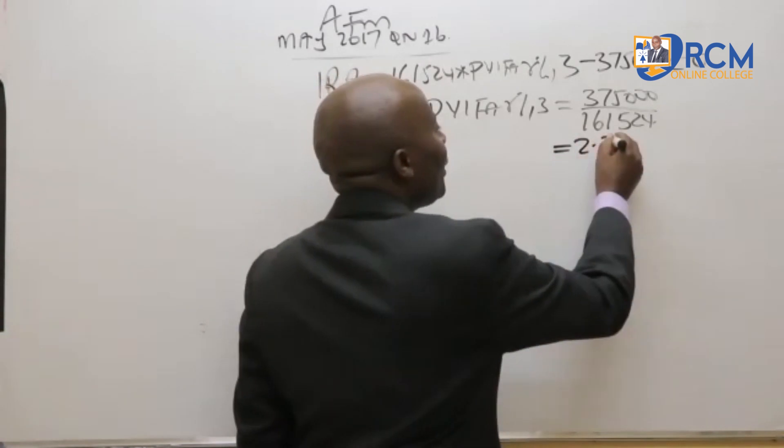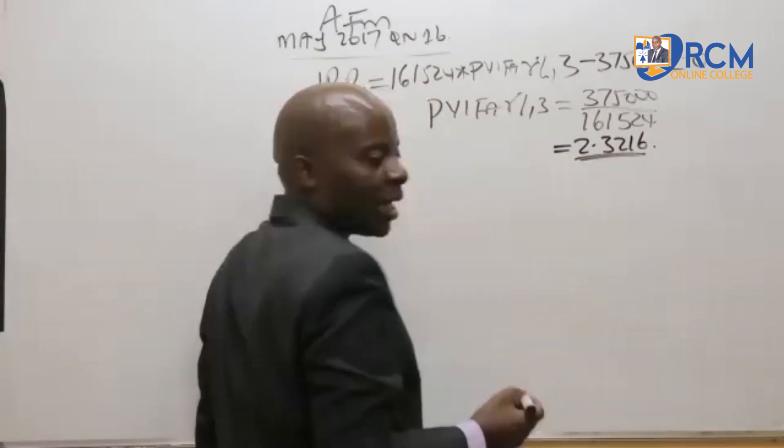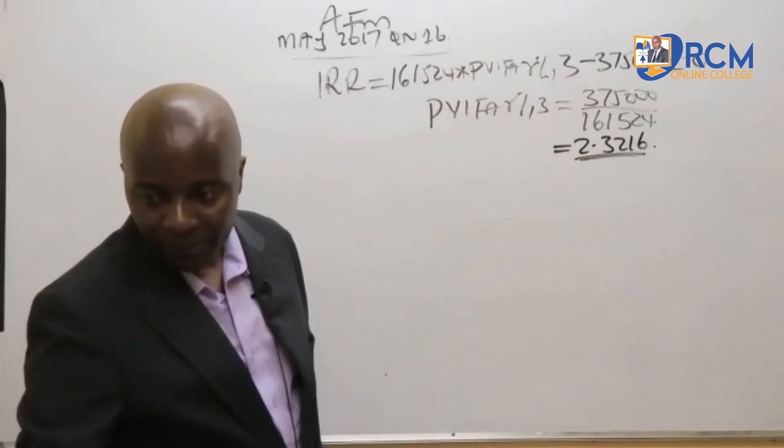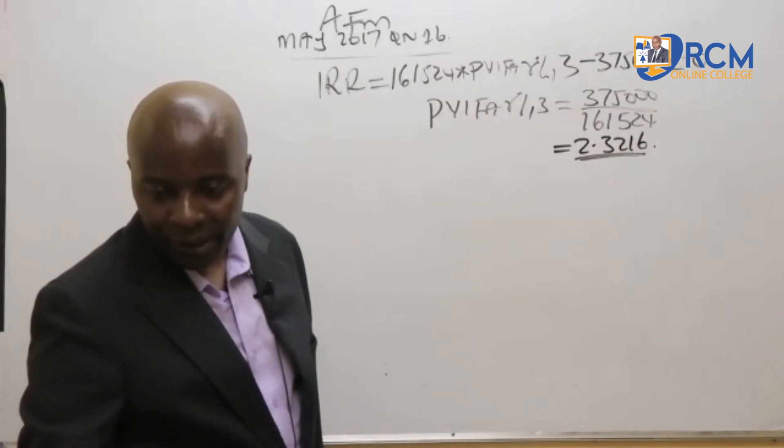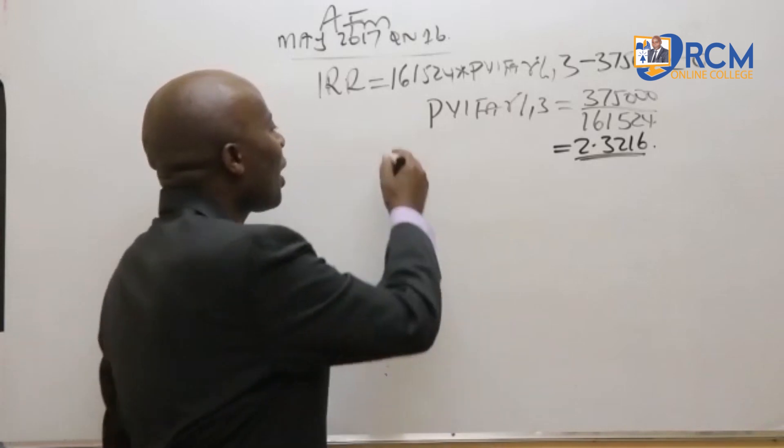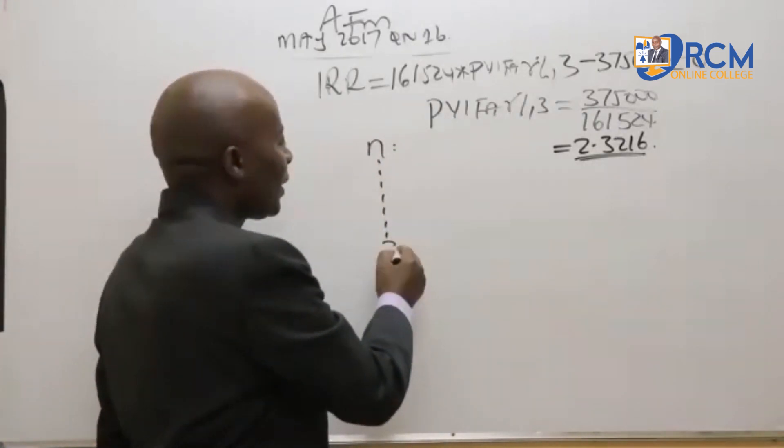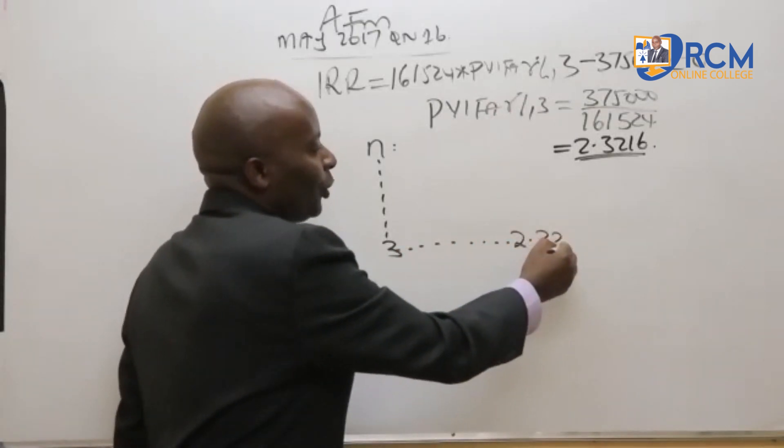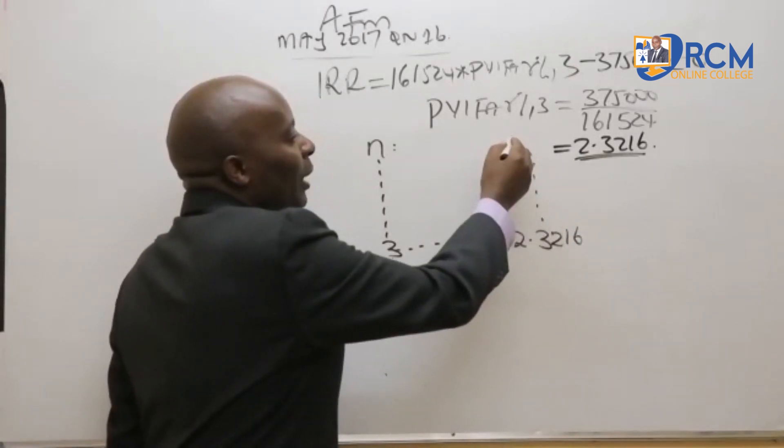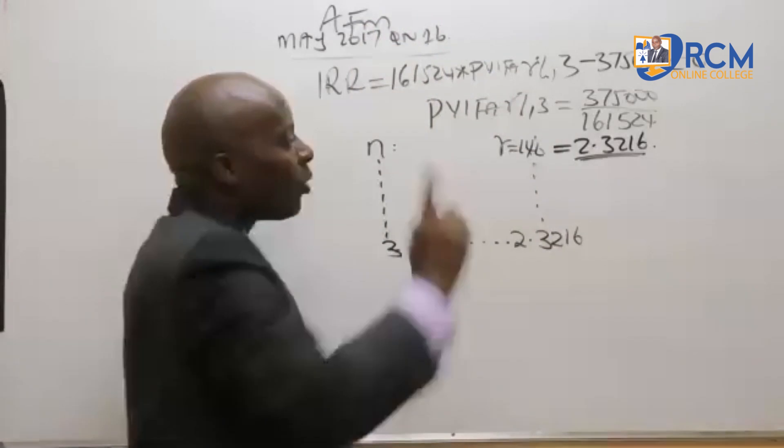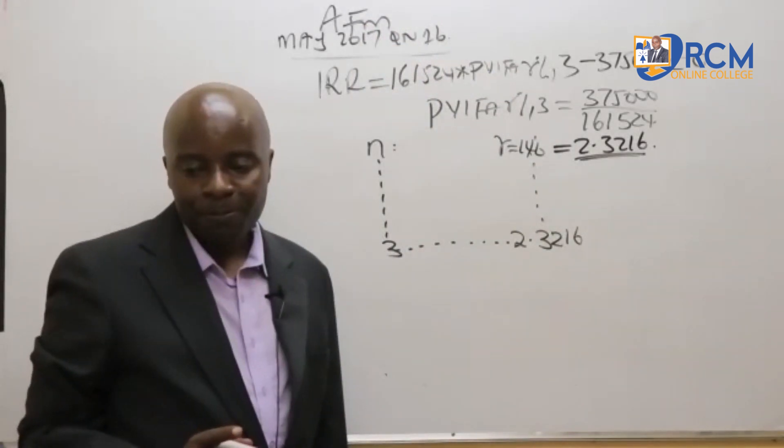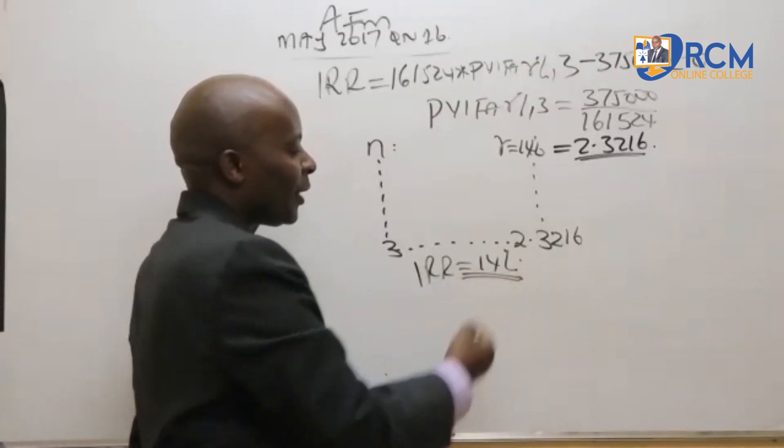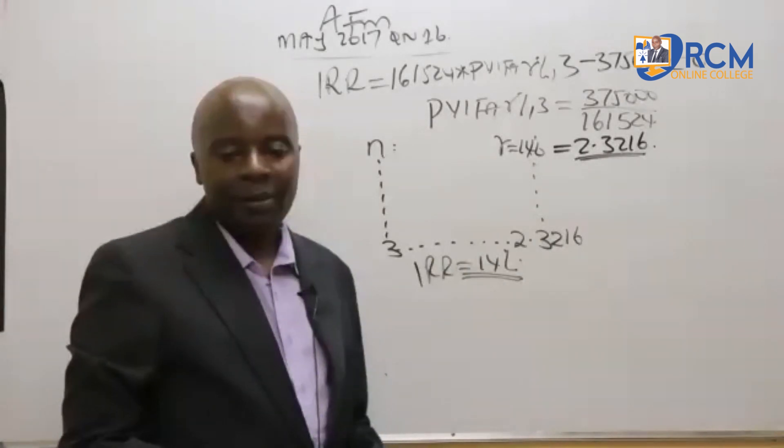So this is 2.3216 like that. And then my work today gentlemen will simply be to look for where I'm able to see my end. Number of years are three. I'll want to work with these three up to the point where I see 2.3216. So up here I should be able to read the rate of return, which somebody long time ago told me is 14%. So meaning that our IRR should be equal to 14%.